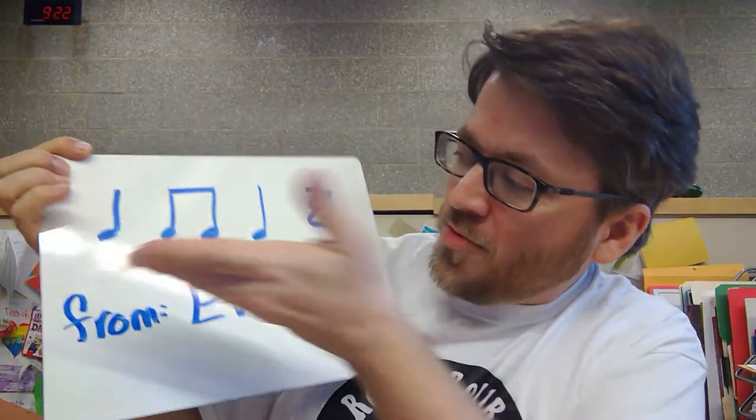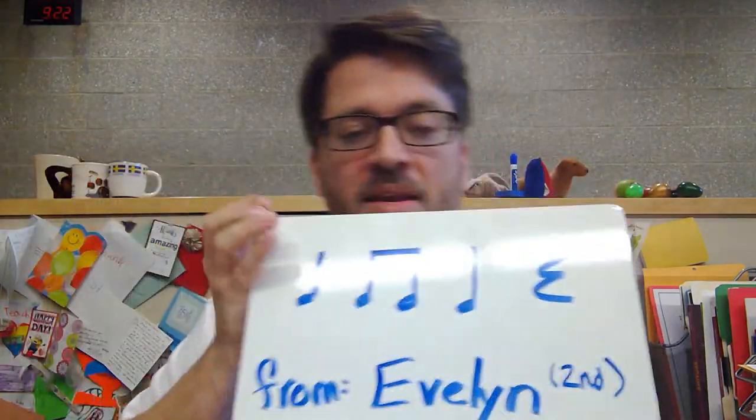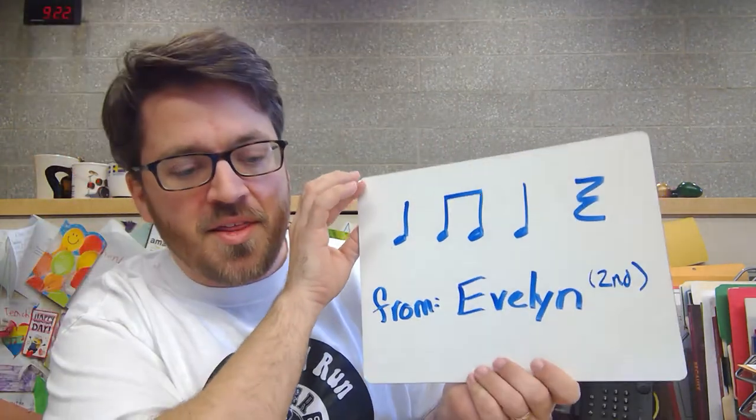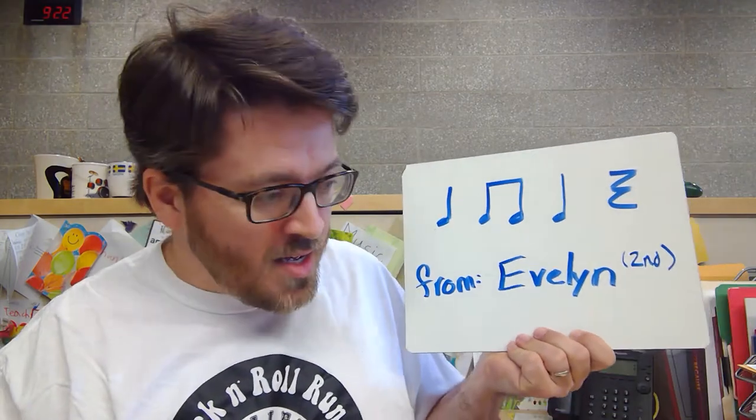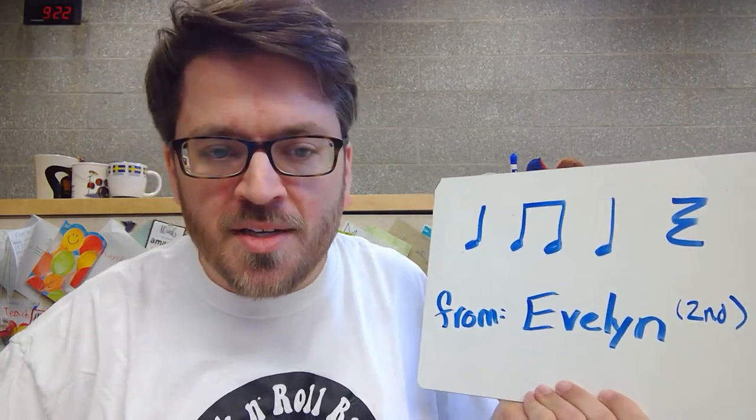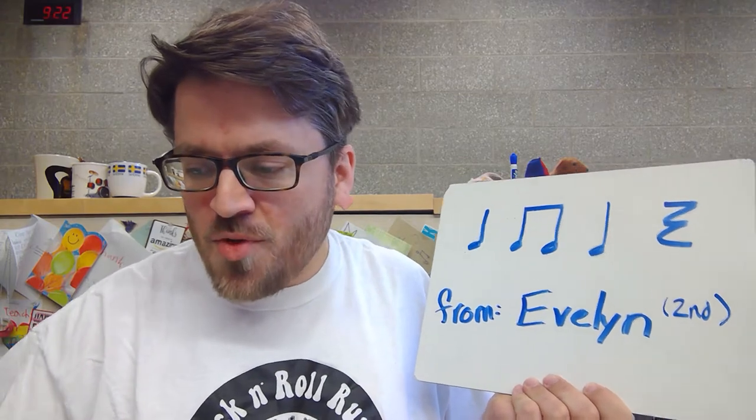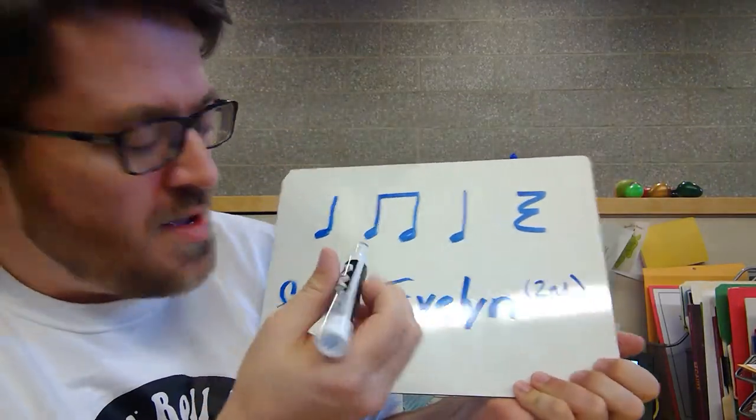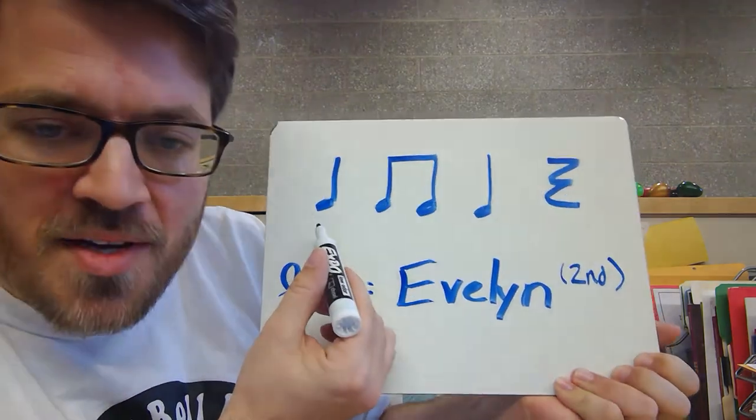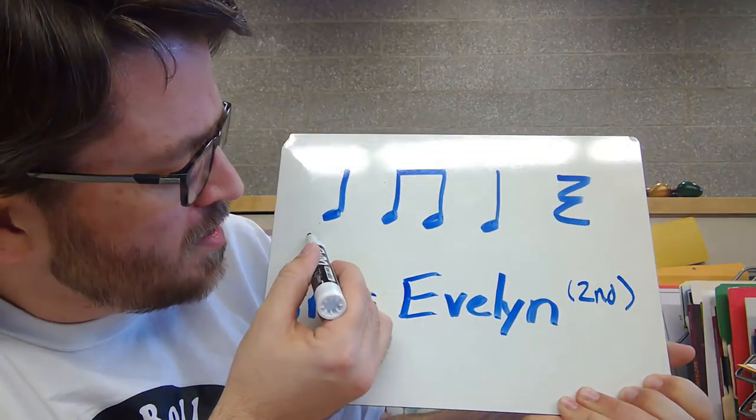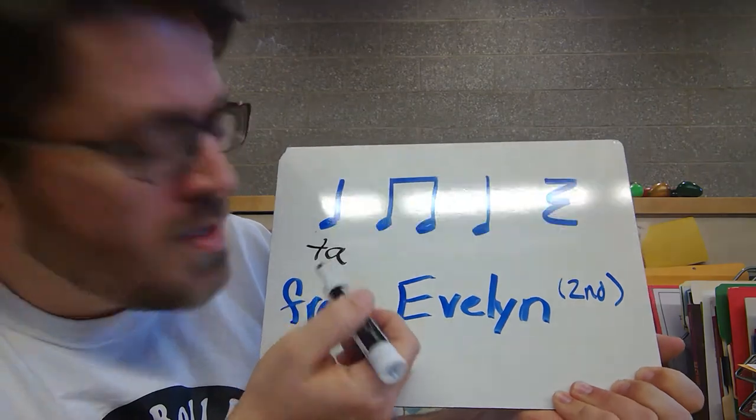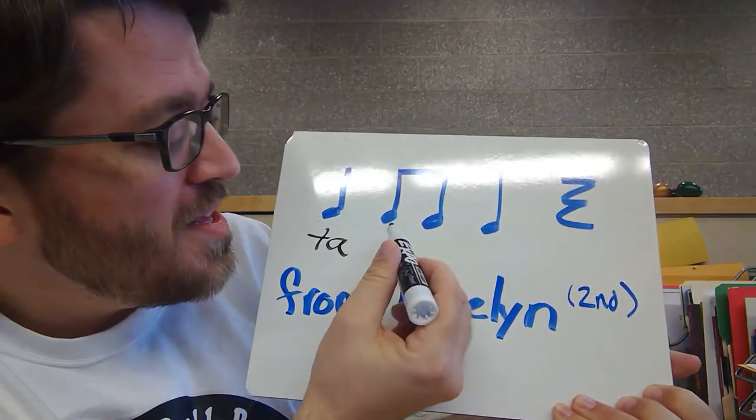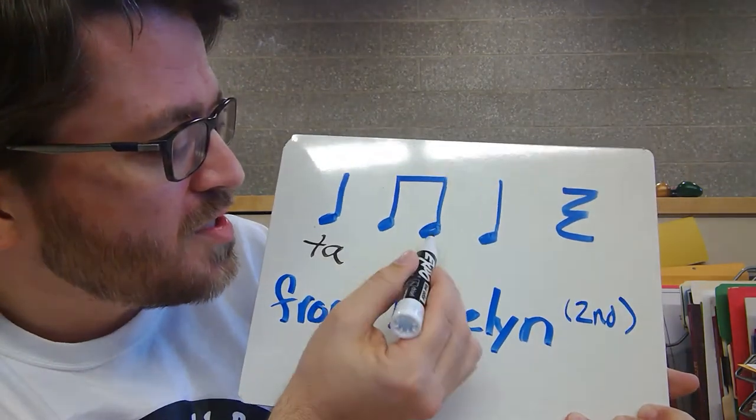Now here's the rhythm that she wrote and I want you to take a look at this and I want you to think about what am I about to write. I want you to predict the future. I'm going to write the rhythm code in underneath here. So think about what am I about to write for this one.